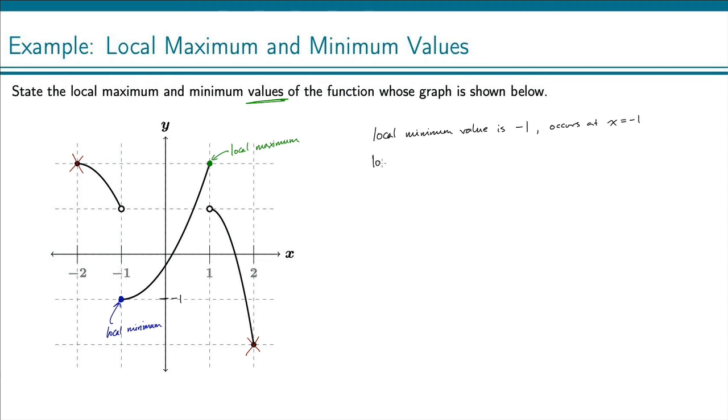And then for our local maximum, local maximum value is, at this point here, the y value right there is 2. And it occurs at the x value, positive 1.